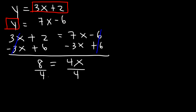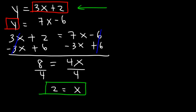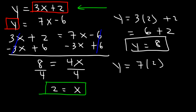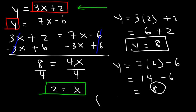Dividing both sides by 4: 8 divided by 4 is 2, so x equals 2. Plugging into the first equation: 3 times 2 plus 2 equals 6 plus 2 equals 8. Checking with the second equation: 7 times 2 minus 6 equals 14 minus 6 equals 8. Both give y equals 8, so the solution is (2, 8).